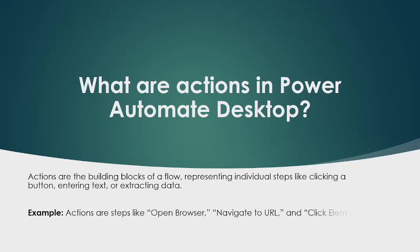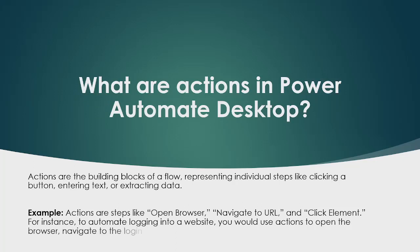The next question is: what are actions in Power Automate Desktop? Actions are the building blocks of a flow, representing individual steps like clicking a button, entering text, or extracting data. For example, actions are steps like 'Open Browser', 'Navigate to URL', and 'Click Element'. To automate logging into a website, you would use actions to open the browser, navigate to the login page, and enter credentials.